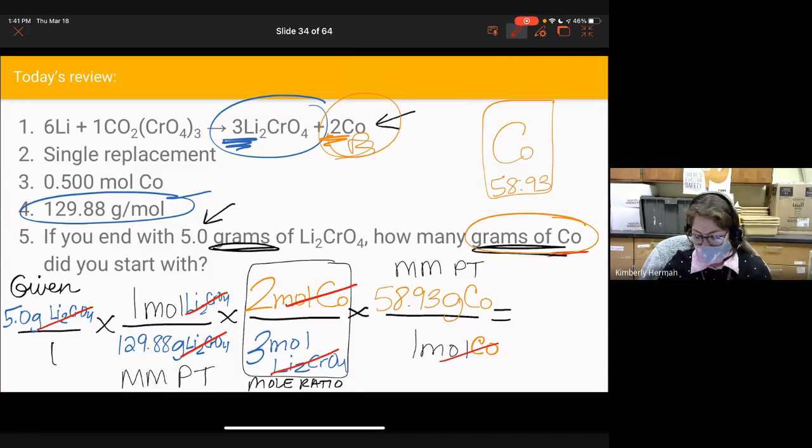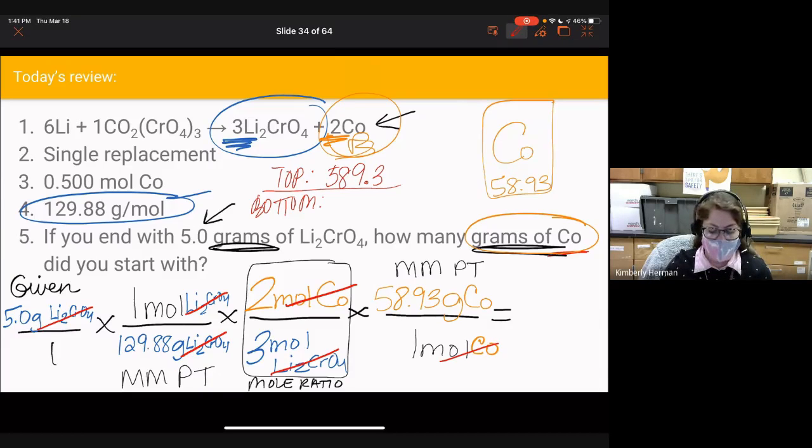Our top part is 589.3, that's 5 times 2 times 58.93. The bottom part is 129.88 times 3. We don't have to show the 1s in our calculator. Our bottom is 389.64. Then we divide top by bottom: 589.3 divided by 389.64. We get a very long decimal: 1.512421723.